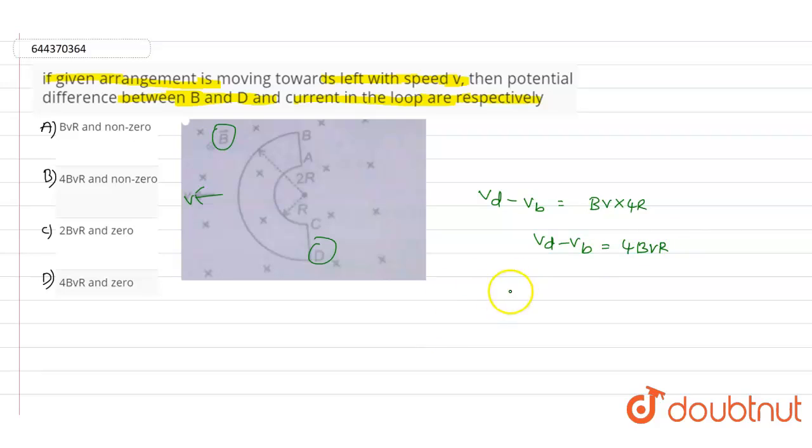...will be 0 in the loop because we know that the net EMF in any closed loop is 0 only. So according to that, option D, if you observe...